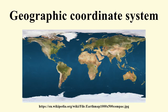To establish the position of a geographic location on a map, a map projection is used to convert geodesic coordinates to two-dimensional coordinates on a map. It projects the datum ellipsoidal coordinates and height onto a flat surface. The datum, along with a map projection applied to a grid of reference locations, establishes a grid system for plotting locations. Common map projections in current use include the Universal Transverse Mercator, the Military Grid Reference System, the United States National Grid, the Global Area Reference System, and the World Geographic Reference System.